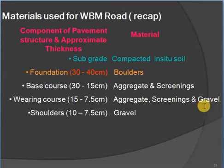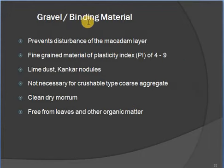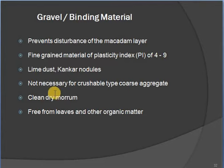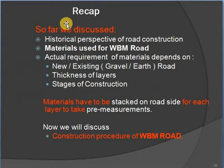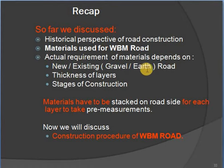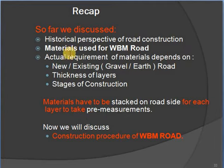Gravel or binding material prevents disturbance of the macadam layer. It is a fine-grain material with plasticity index of 4 to 9; lime or kankar nodules are not necessary for flexible-type coarse aggregate. It should be clean dry moorum, free from leaves and other organic matter. Actual material requirement depends on whether it is a new or existing road and the thickness of layers.